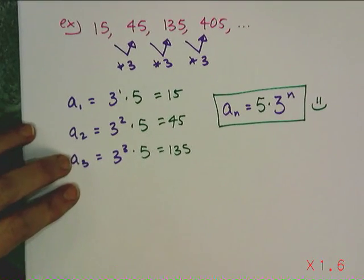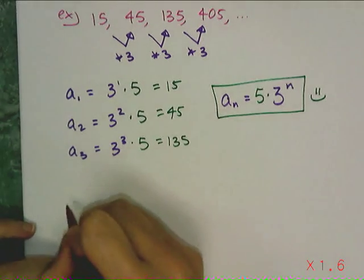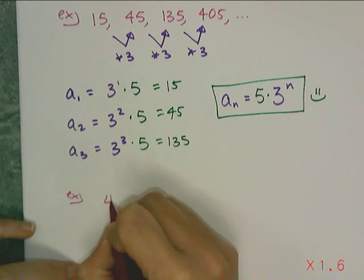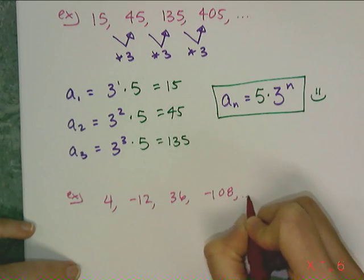Alright. So let's try one that's a little bit harder. Let's look at this one. 4, negative 12, 36, negative 108.